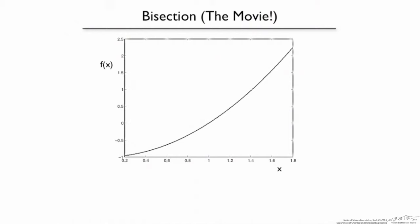Welcome to Bisection, the movie. We want to determine the root of the equation. Just so we know what we're looking for, let's point out the root. It's the value of x such that the function is 0. So we find the 0 on the axis, go over to the graph, and trace down to see what the value of the function is. In this case it's 1, so we remember that — but of course we don't actually know this, so let's erase it.